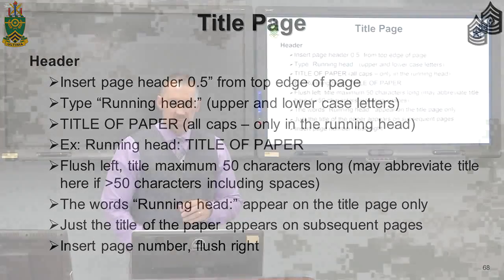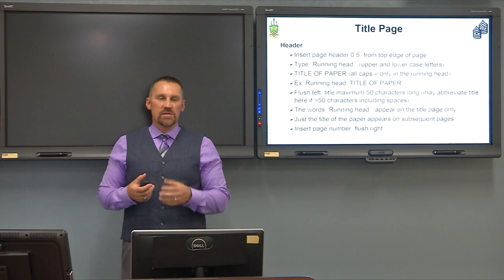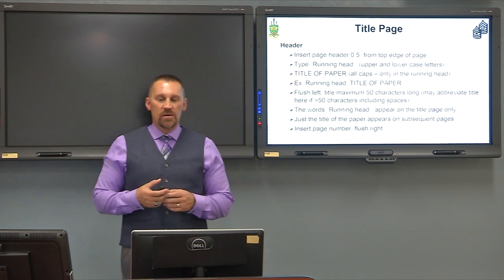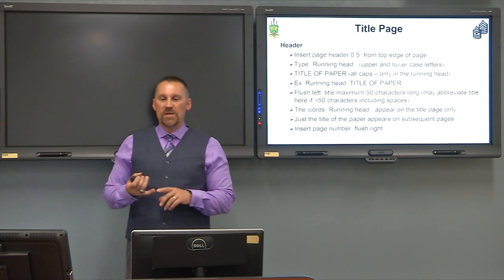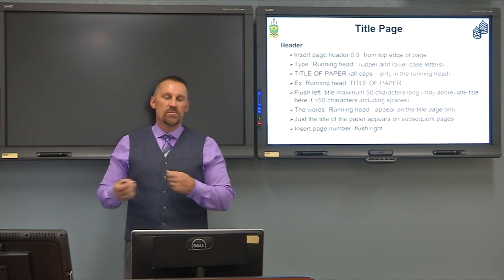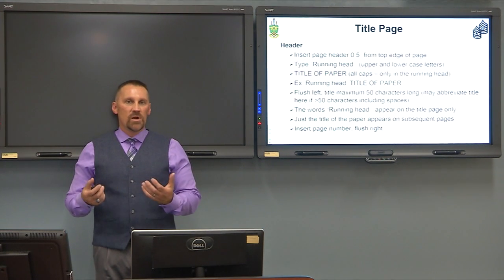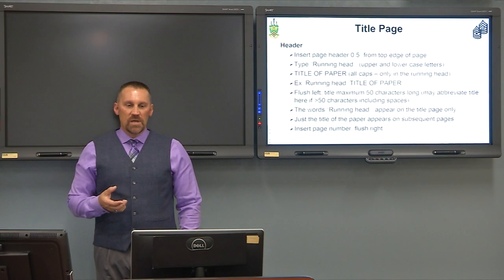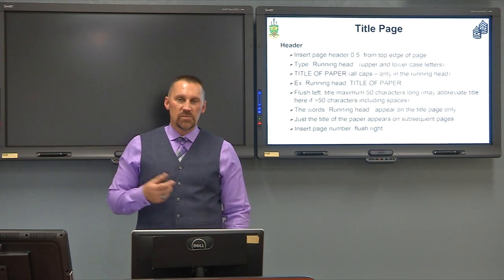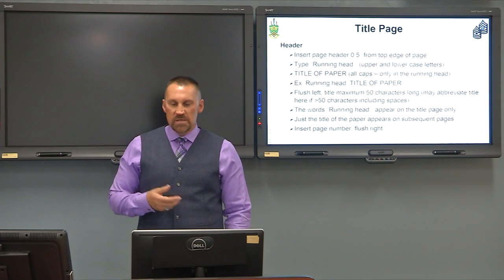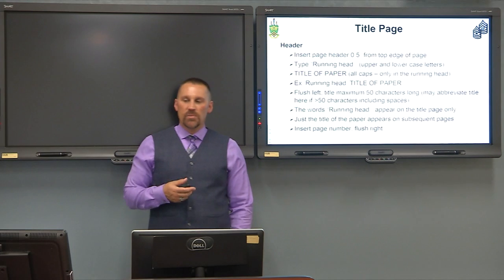When you establish your running head, the primary purpose is to be able to collate your document. Let's say you print your document at the printer and another print job gets mixed up with yours — with the running head, the page number, and the title at the top of the page, you can pull your sheets out and put your document back together. That's really a primary function in a printed document for a running head: it ensures you're able to reorganize the paper if the pages get shuffled.